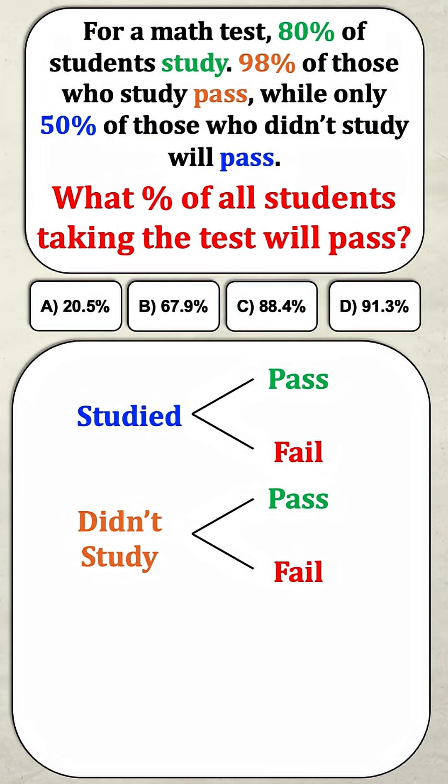These are the only possible outcomes. Now we need to assign the probabilities of each of these things happening. We're told that 80% of the students studied, which means 20% of them didn't study. We're also told that 98% of the students who studied passed, which means 2% of the students who studied failed.